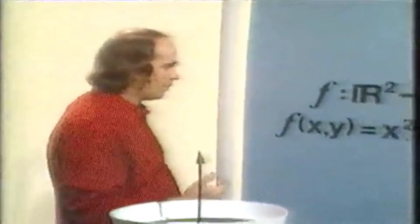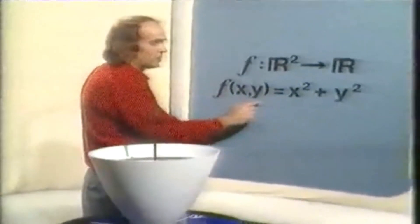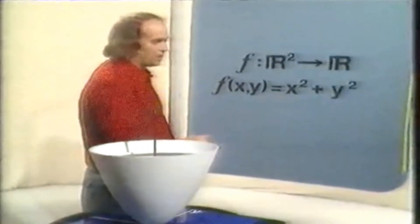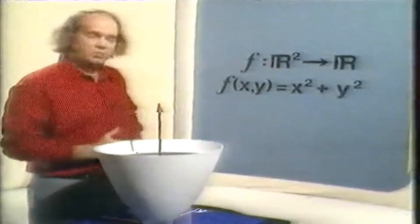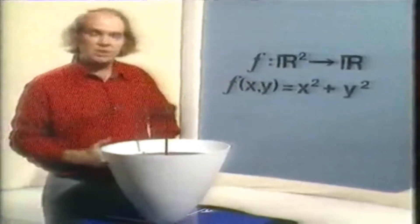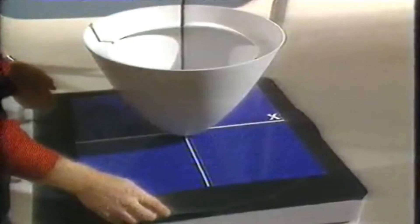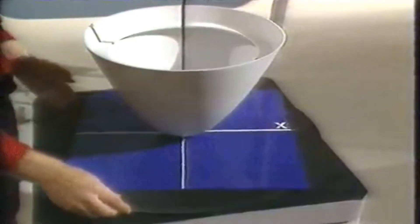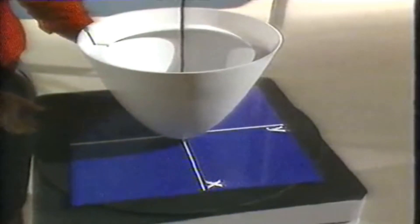Let's look at a particular example — quite an easy one to remember. It's the function that maps the point (x, y) to the number x² + y². We know that such a function can be represented by a surface, and here it is — it's just a paraboloid.